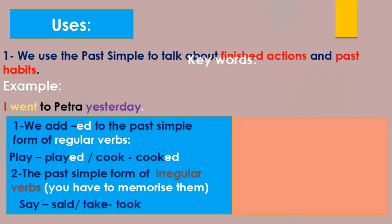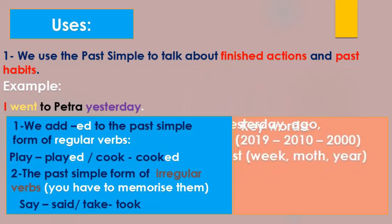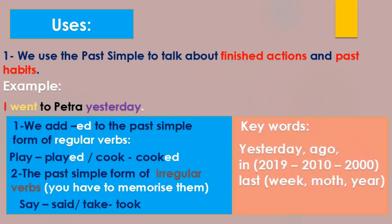Now let's move to the keywords. We have yesterday, ago, in 2019, 2010, 2000, last week, last month, last year. Okay guys, now let's move to the exercise.